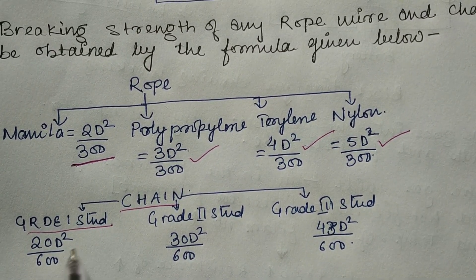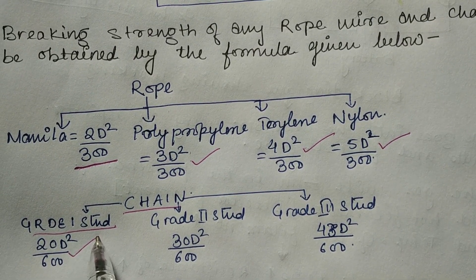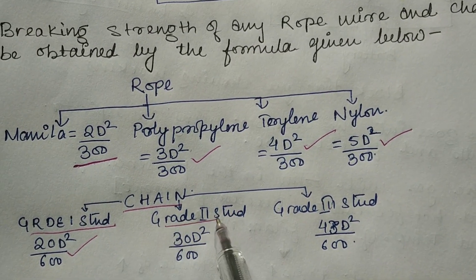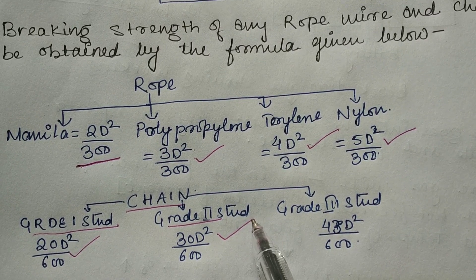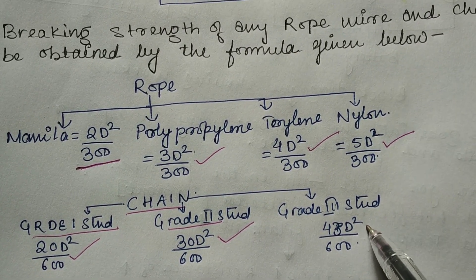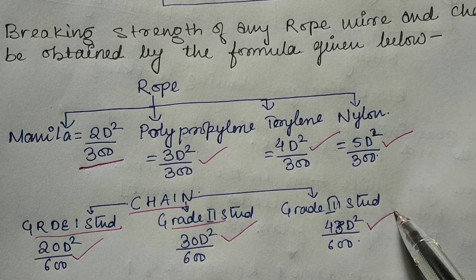For chains: grade 1 stud chain is 20D²/600, grade 2 is 30D²/600, and grade 3 is 43D²/600.